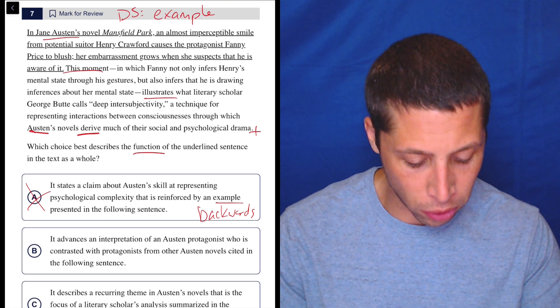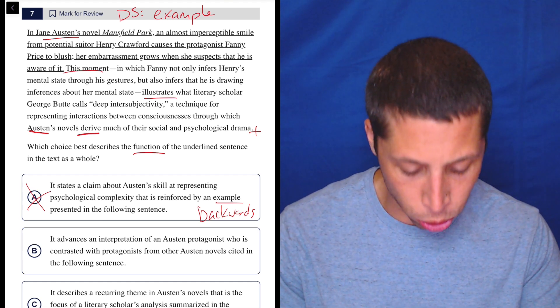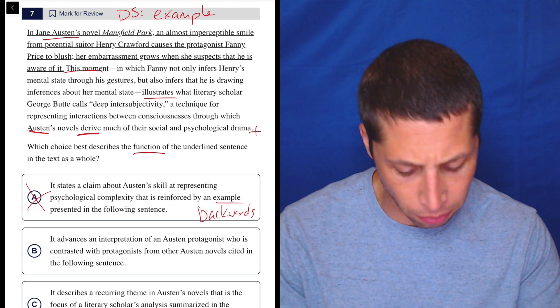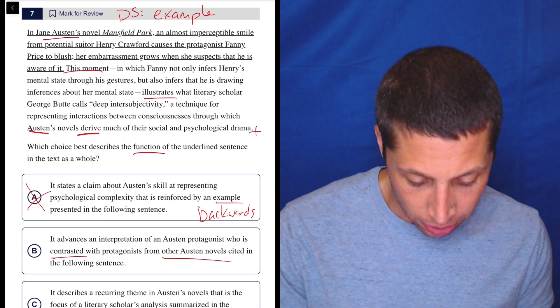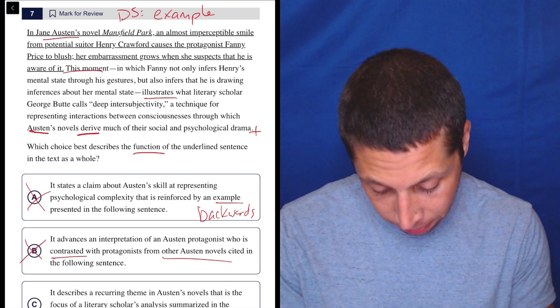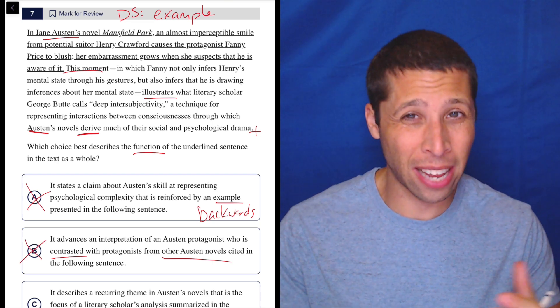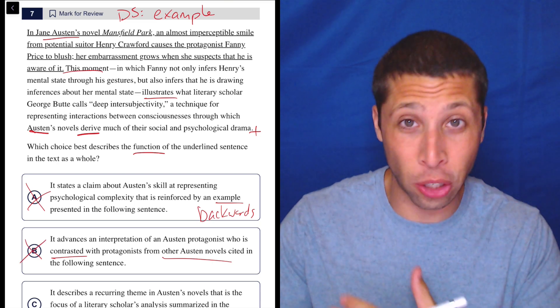B, it advances an interpretation of an Austen protagonist who is contrasted with protagonists from other Austen novels cited in the following sentences. No. Are there other novels? I don't think so. Yeah, I don't think so. And contrasted, it just seems like, again, it's an example of something, not an exception to some other rule.